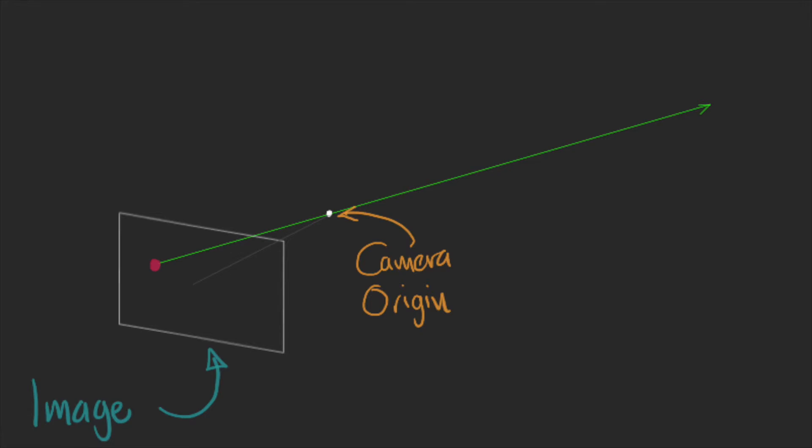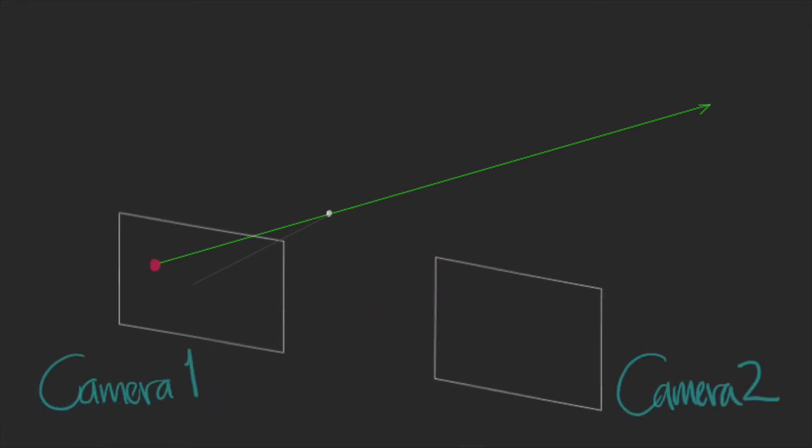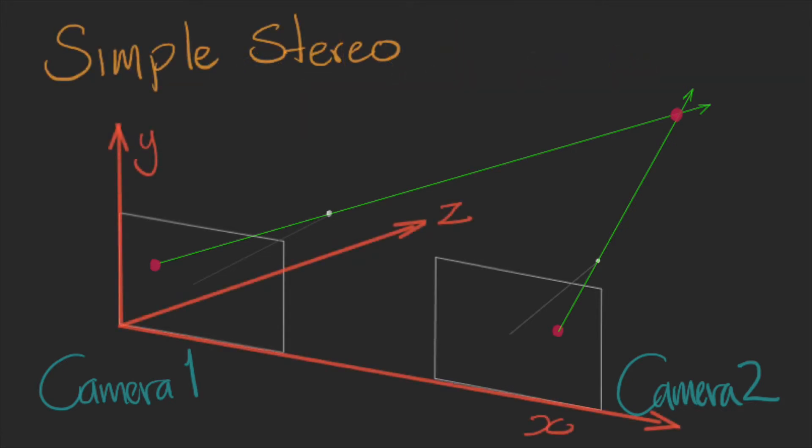Now, imagine that we include a new camera to the system, and we can take another image of the same point. From this second camera, we also know the line in which the red dot is located. Then, we can use the intersection of these two lines to estimate the location of the point.